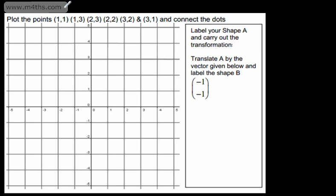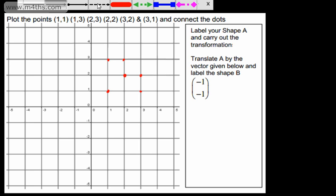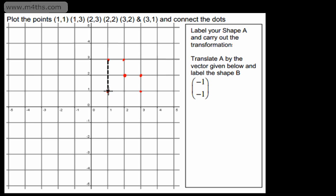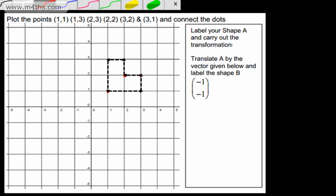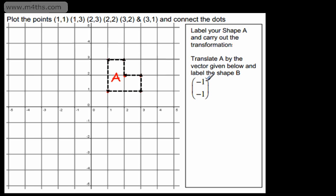We're asked to plot the points (1,1), (1,3), (2,3), (2,2), (3,2), and (3,1) and connect the dots. So we plot each point and connect them — this is going to look like a little Tetris block. This is shape A, and we're given a vector to translate it: (-1, -1). So it's going to move left by 1 and down by 1.